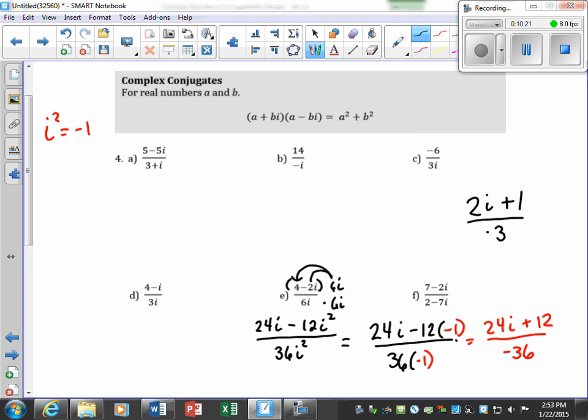Now even on the last one, I didn't make the comment that if you don't want negatives in the bottom, we can change the signs of everything in the problem, so that would be equivalent to negative 2i minus 1 over 3. Both of those are valid. If it's picky about having a negative in the bottom, which oftentimes it is, then we may want to do that.